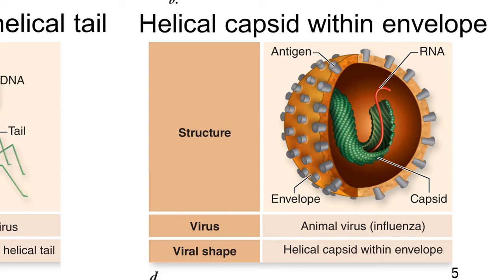Helical capsids within an envelope represent one of the common symmetry structures found in animal viruses — for example, influenza virus, HIV virus, and coronavirus.